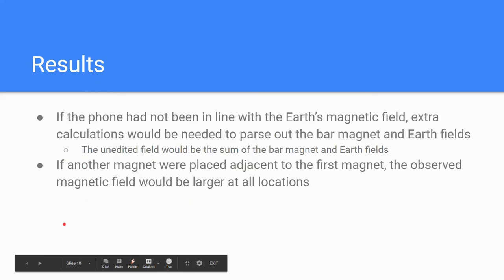As for the lab questions, if the phone had not been aligned with the Earth's magnetic field, we would need to know how the phone was aligned with the field so we could properly factor out the Earth's magnetic field from the total measured field. And then if another magnet had been added, we would get a larger magnetic field at all locations due to a larger mu.